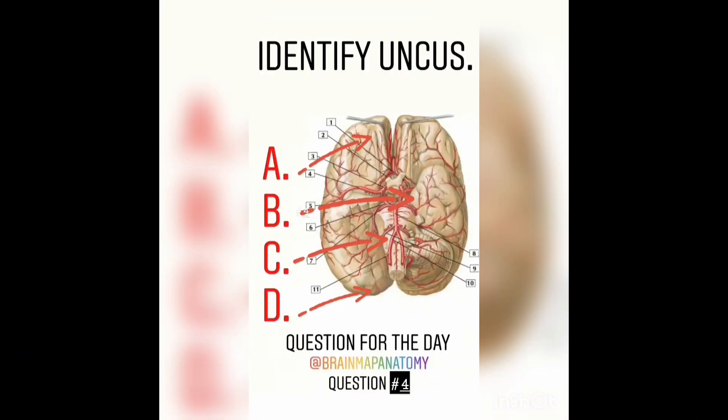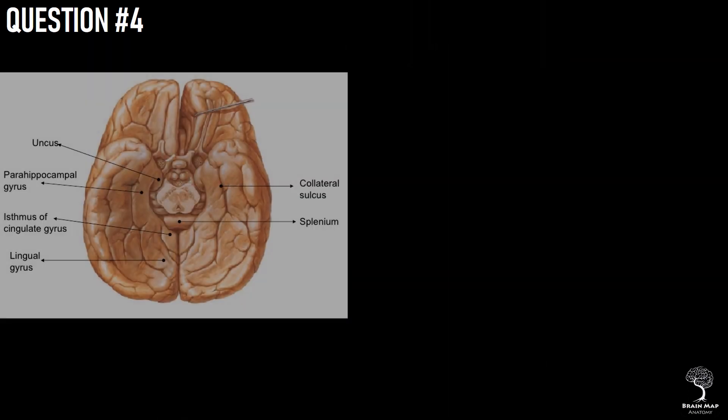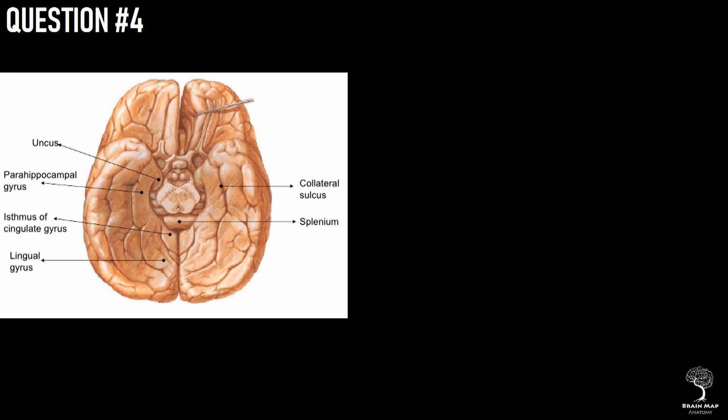Identify the uncus in the given picture. Option B is the right answer. The anterior end of the parahippocampal gyrus hooks sharply backwards at the uncus. The uncus is limited laterally by a short rhinal sulcus. Space-occupying lesions in the middle cranial fossa caused by tumor, hemorrhage, or edema can push the uncus over the tentorial notch against the brainstem and its corresponding cranial nerves, resulting in brain herniation.